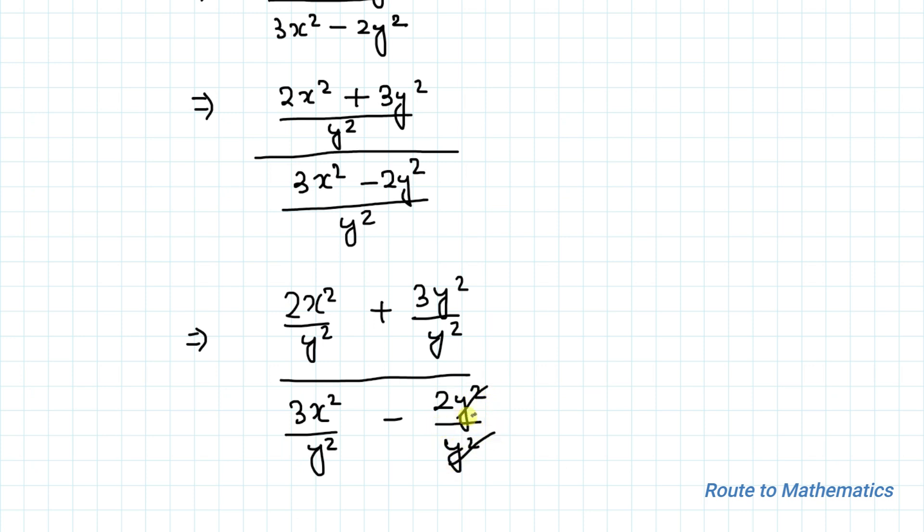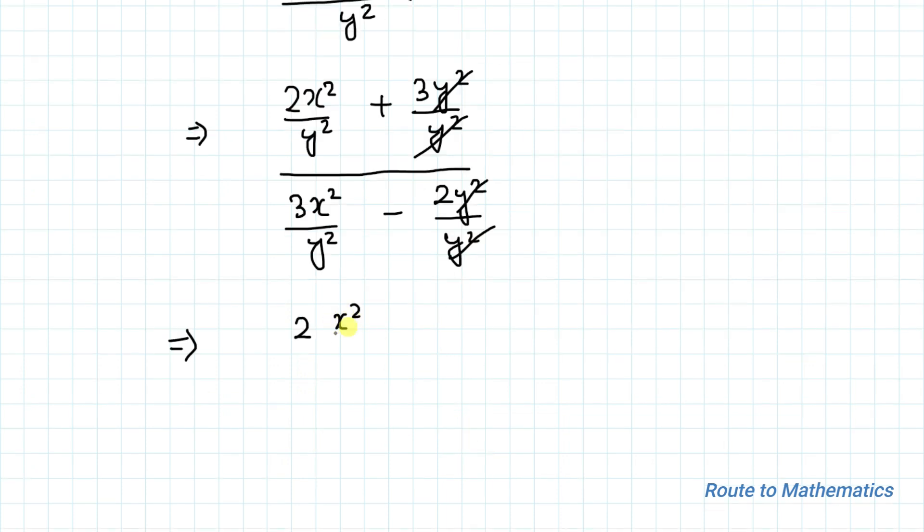So this y square and y square get cancelled out. Similarly in the numerator, these two also get cancelled out. So we have 2x square by y square plus 3 divided by 3x square by y square minus 2.